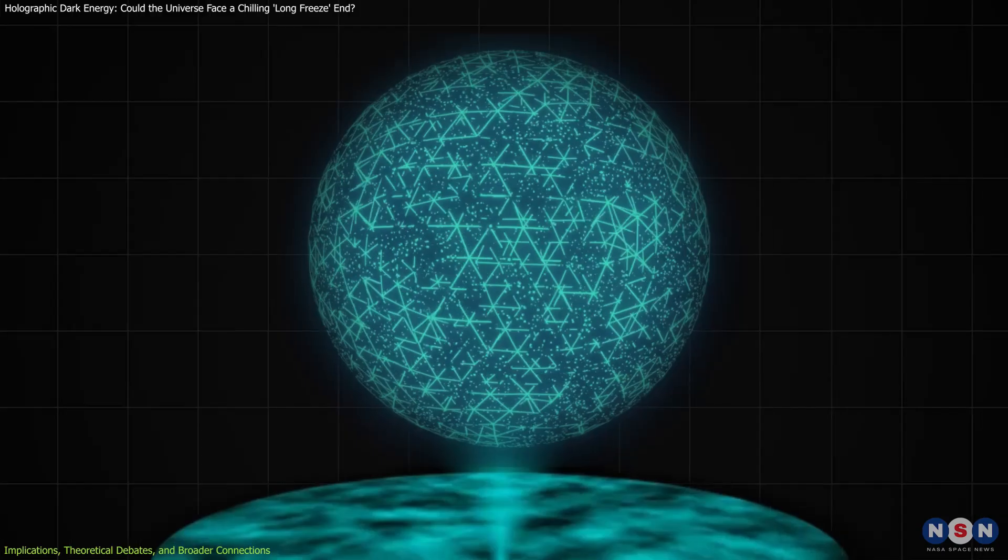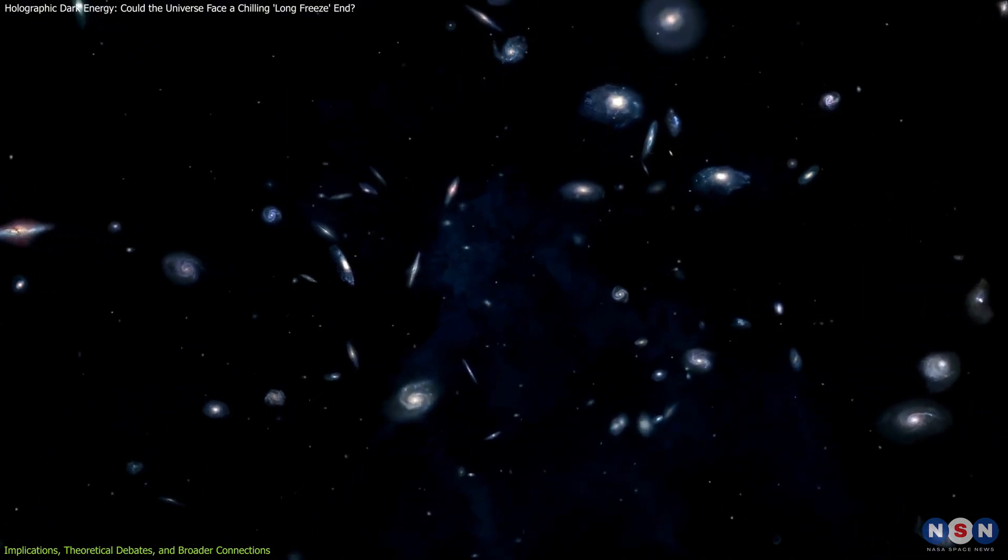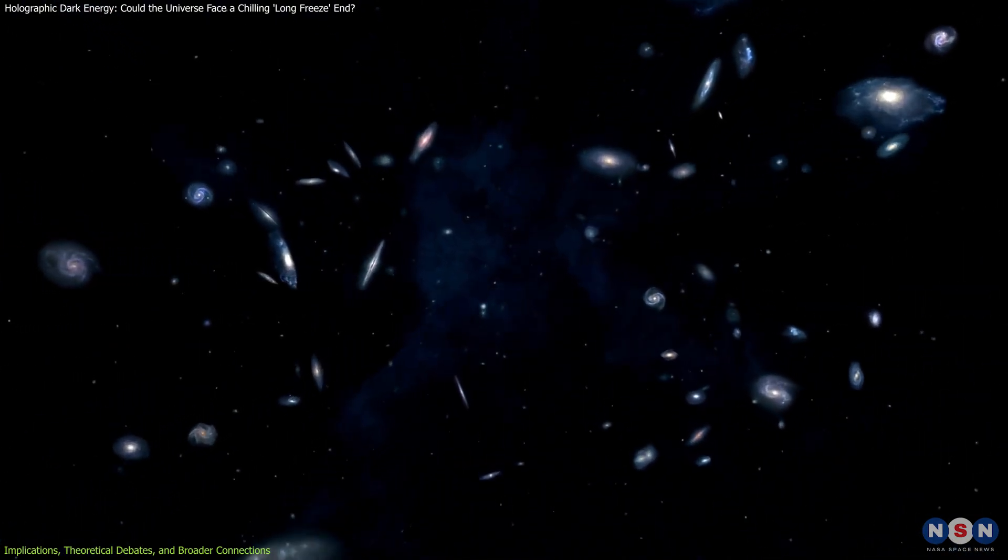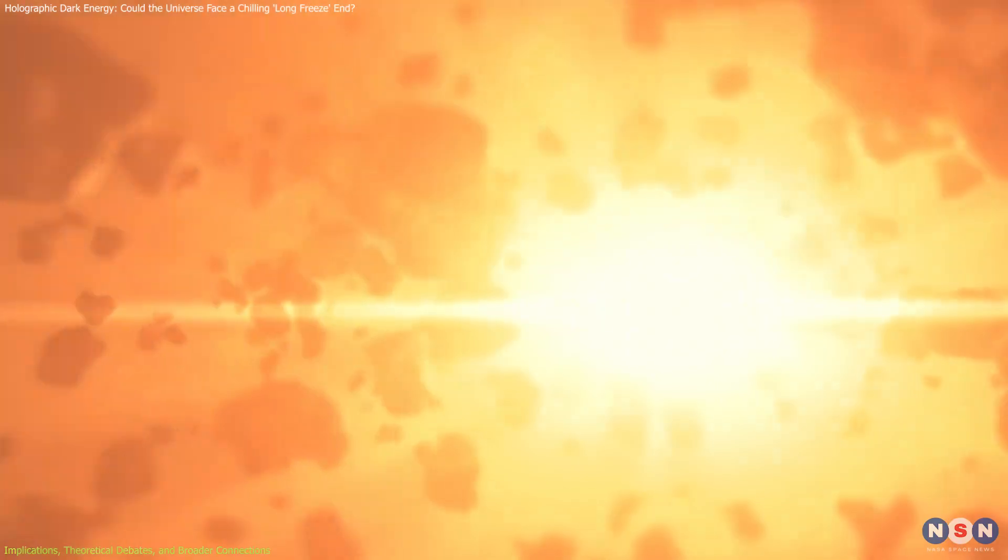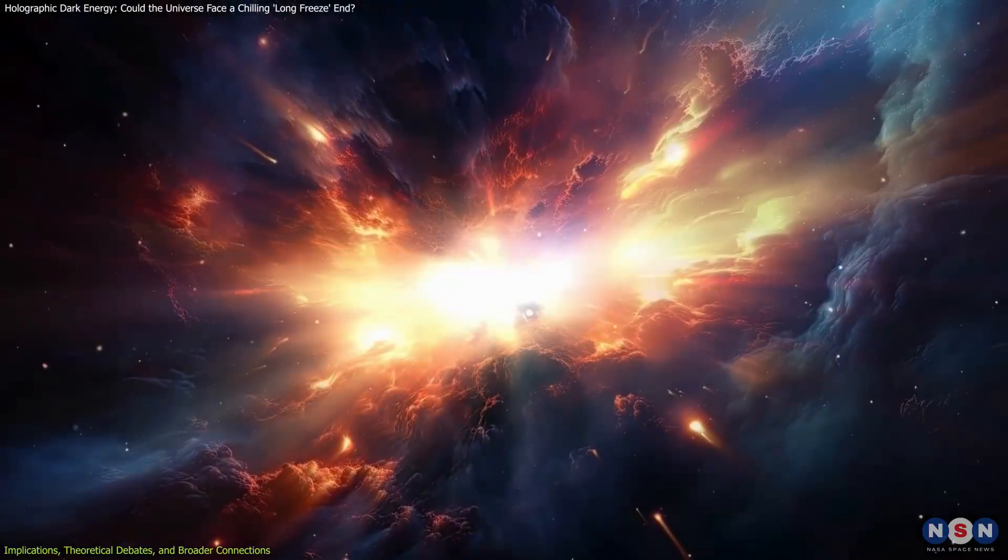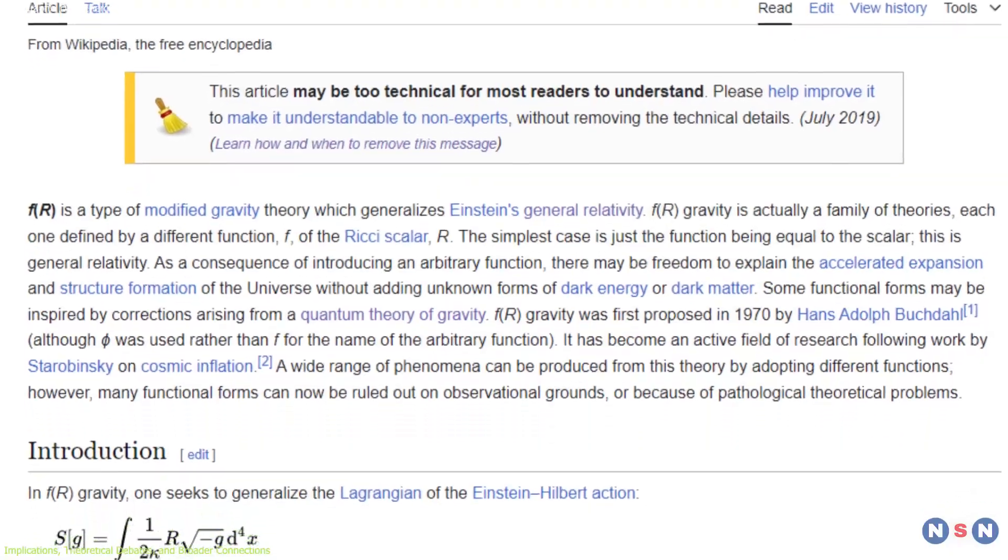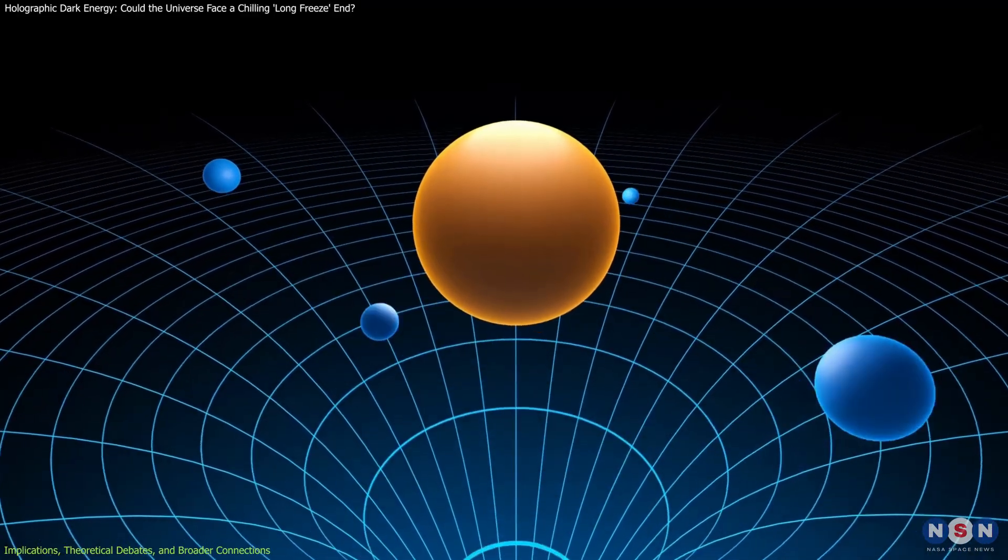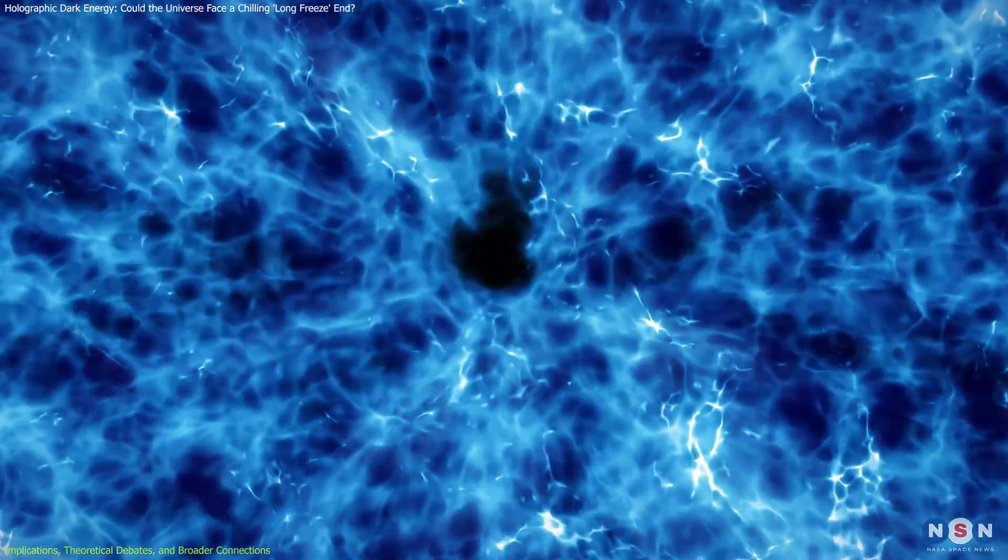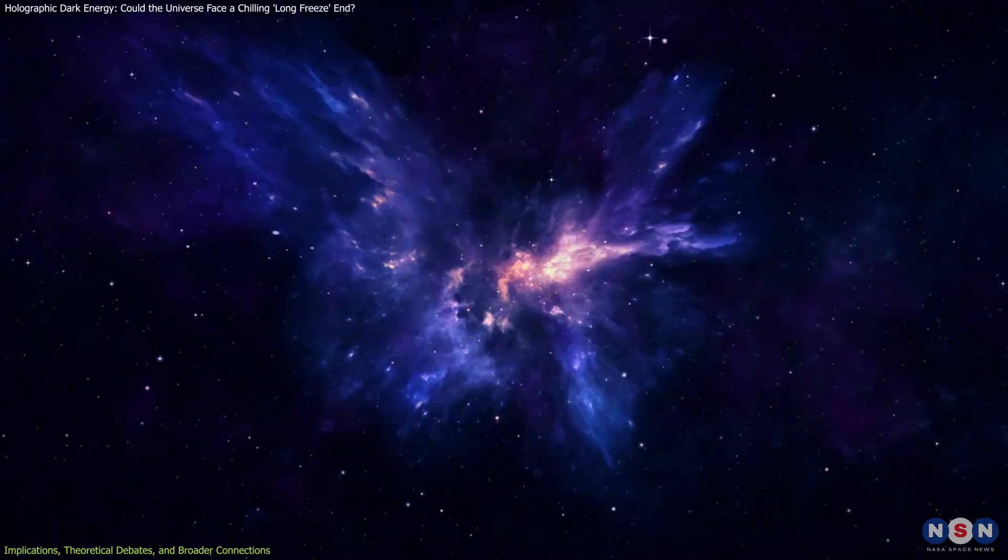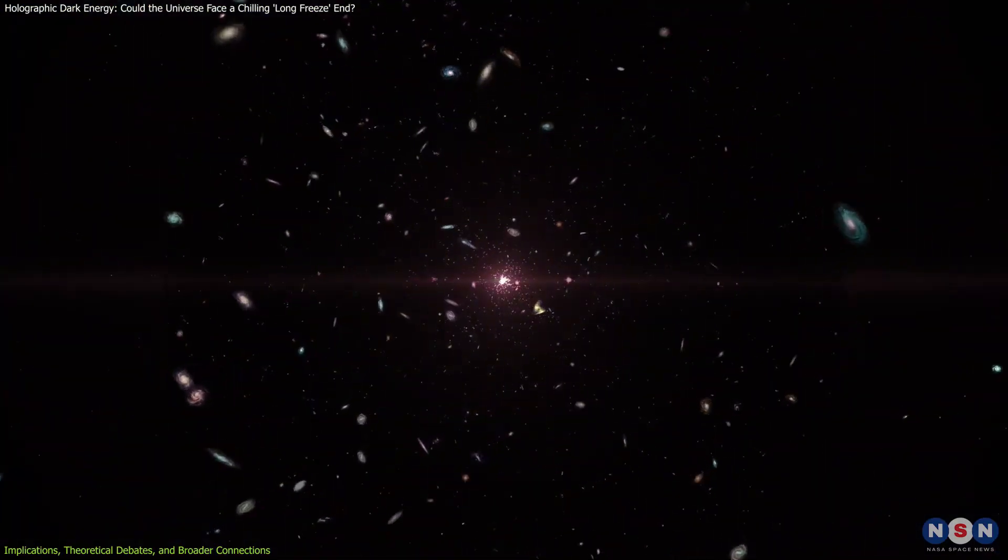The holographic model also invites comparisons to other speculative theories. For instance, phantom energy theories suggest that the universe's expansion could become so rapid that it tears apart galaxies, stars, and even atoms, which is a big rip scenario. Meanwhile, theories of modified gravity, such as f(R) gravity, propose changes to general relativity to account for dark energy without needing an entirely new substance. Each of these theories offers a different fate for the universe, from catastrophic collapse to endless expansion.